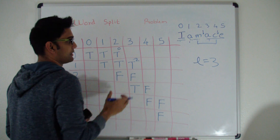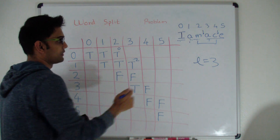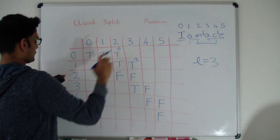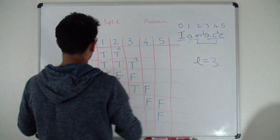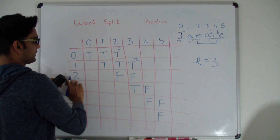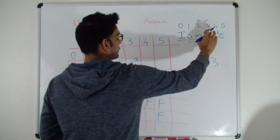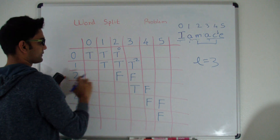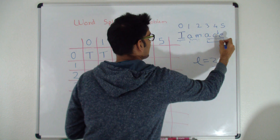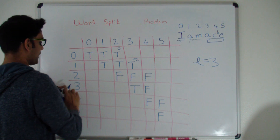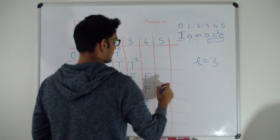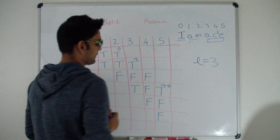For 'MAC': is MAC in the dictionary? No. Splitting after M: (2,2) is false, so that doesn't work. Splitting after 'MA': (2,3) is false, so that doesn't work either. So (2,4) is false. For 'ACE': does ACE belong in the dictionary? Yes, it does! So (3,5) is true, and we note we considered the entire word.